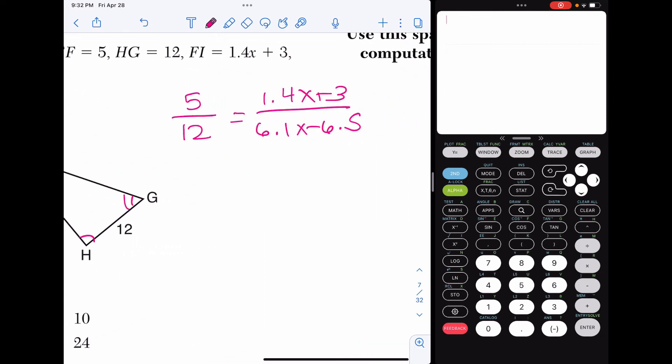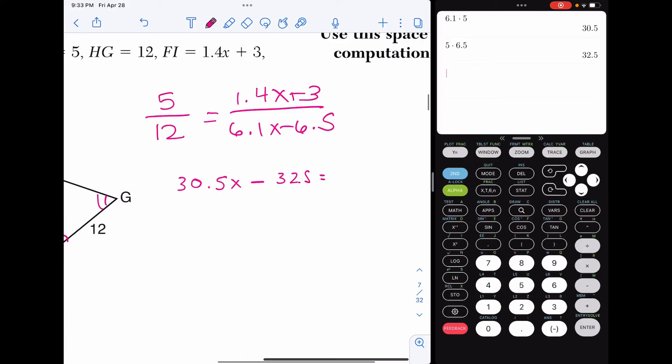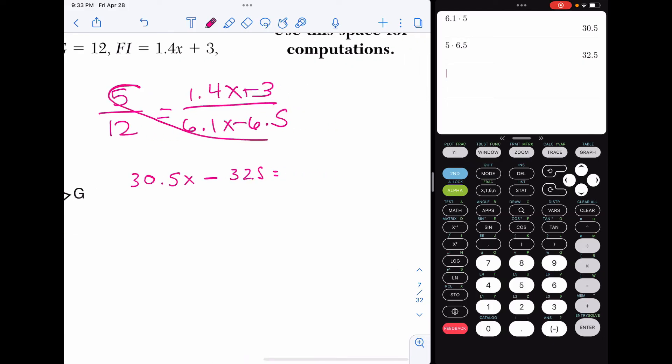Alright, so now let's solve this proportion here. So I have five that I'm going to multiply out by 6.1X. So 5 times 6.1X is going to be 30.5X minus 32.5. Okay, so that's multiplying this way. Multiply the other way. 12 times 1.4 is 16.8X. And then 12 times 3 is 36.